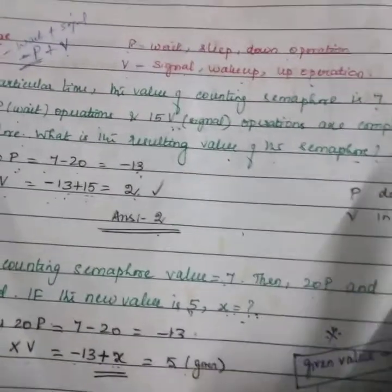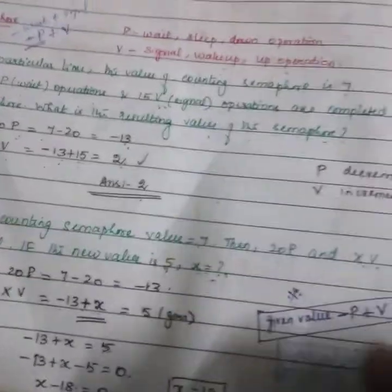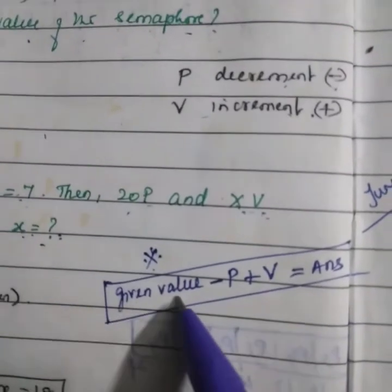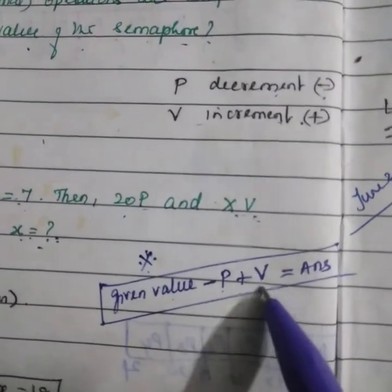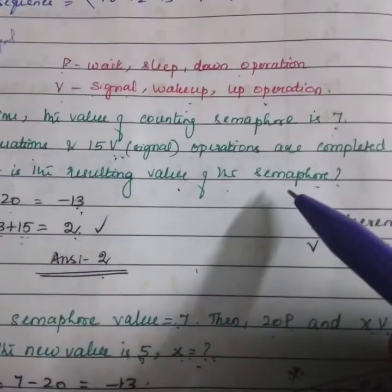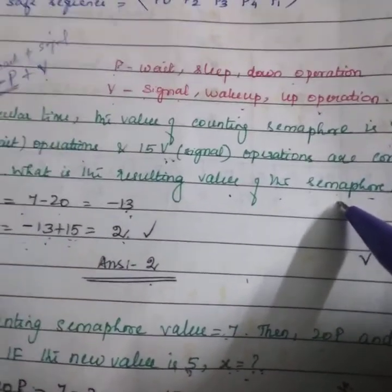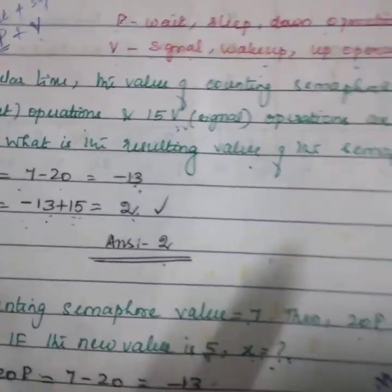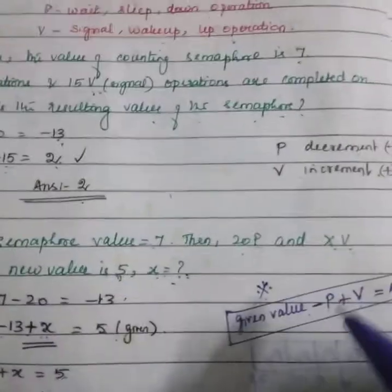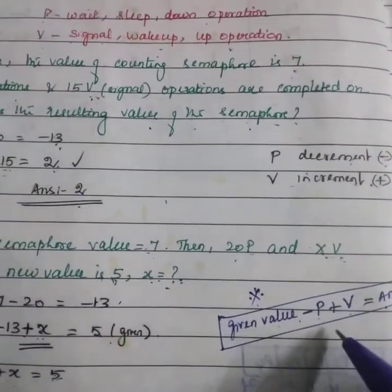In order to understand this, you please consider this simple idea: Given value minus P plus V equals answer whenever this type of questions comes. It is usually coming in UGC net and ISRO. The simple way to find the answer is given value.